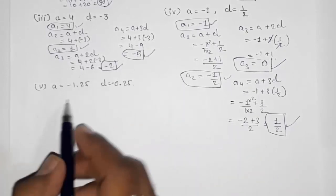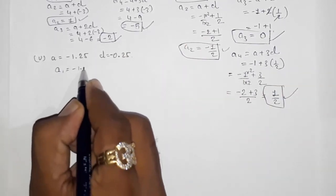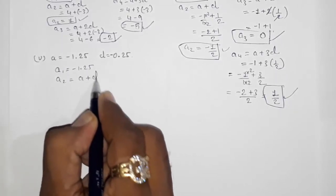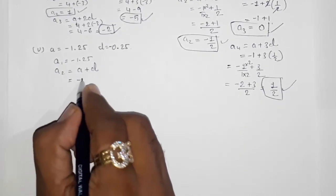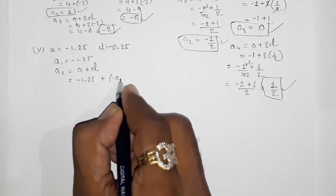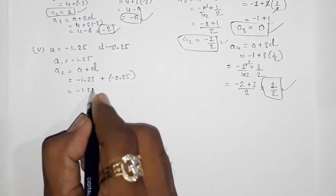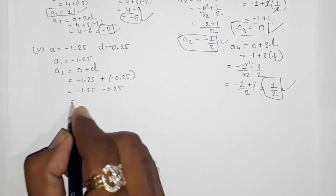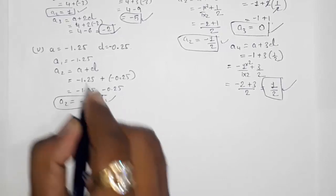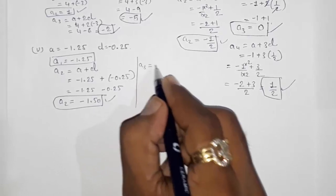The next part uses decimals, but we use the same formula. a1 = -1.25. For a2 = a + d = -1.25 + (-0.25) = -1.50. So a2 = -1.50.